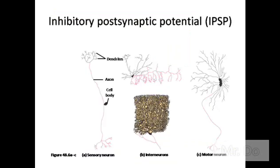Here we're looking at some sample neurons. For example, the interneuron — which is the neuron between all parts of your body — there are millions and millions of them, all connected with one another.